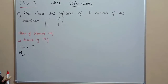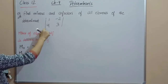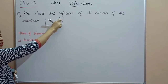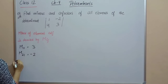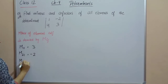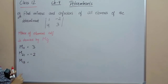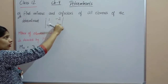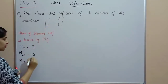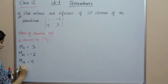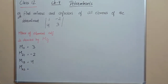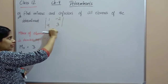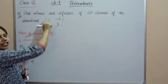M12 means delete the first row and second column; the remaining element is 4, so M12 = 4. M22 means delete the second row and second column; the remaining element is 1, so M22 = 1.